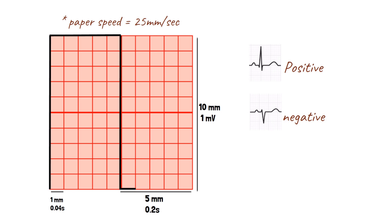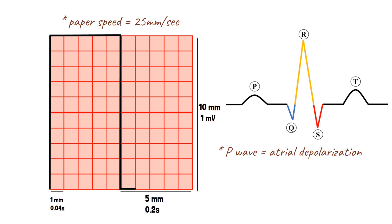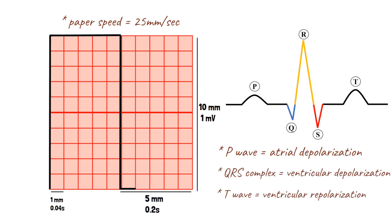On a normal ECG tracing, three waves are recognizable: the P wave, the QRS complex, and the T wave. The P wave represents atrial depolarization. The QRS complex represents ventricular depolarization, and the T wave represents ventricular repolarization.